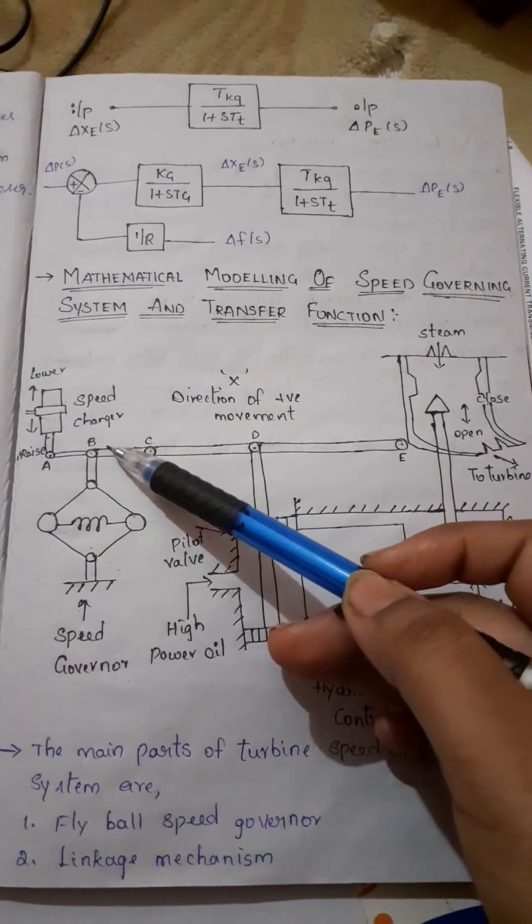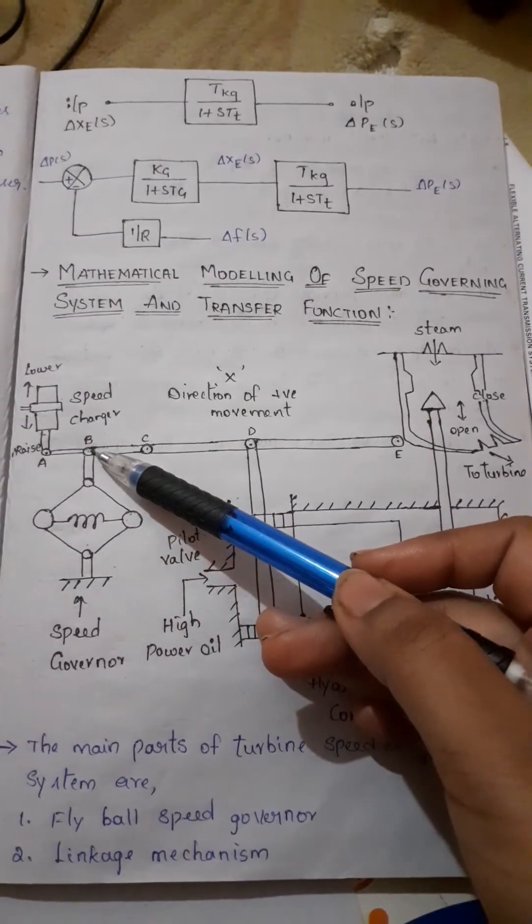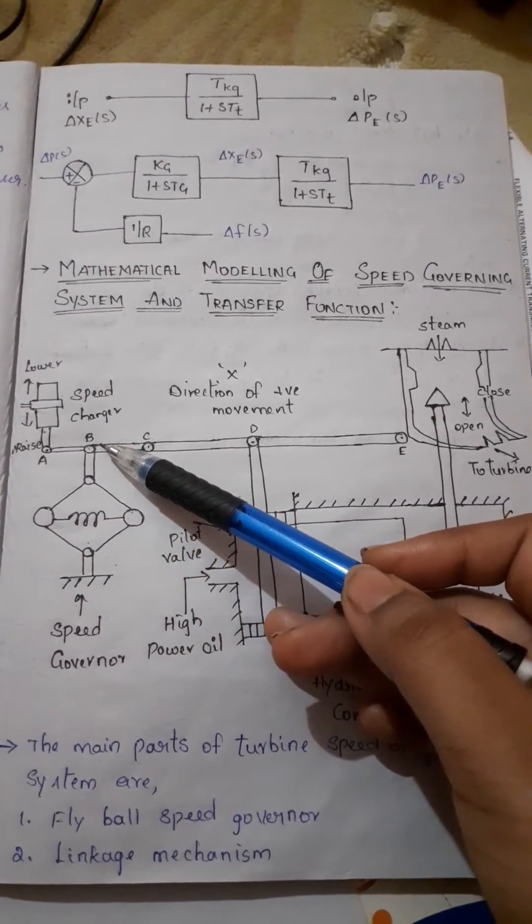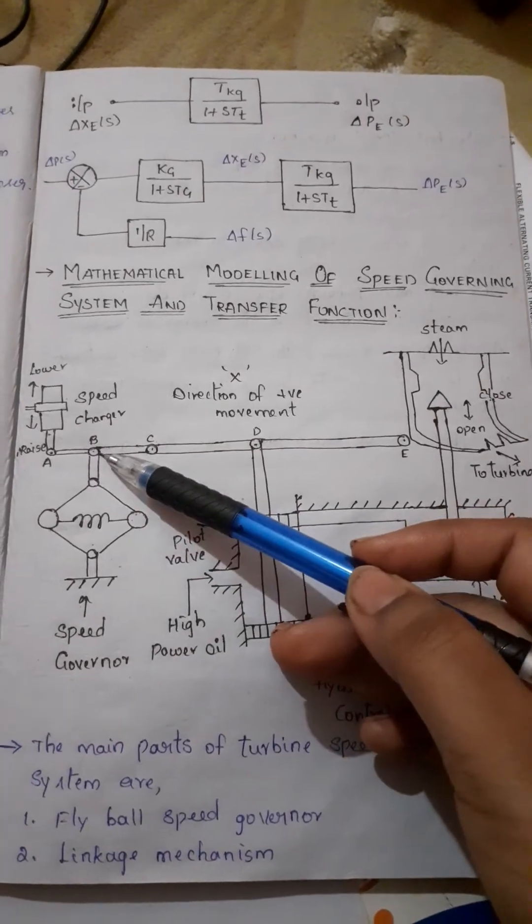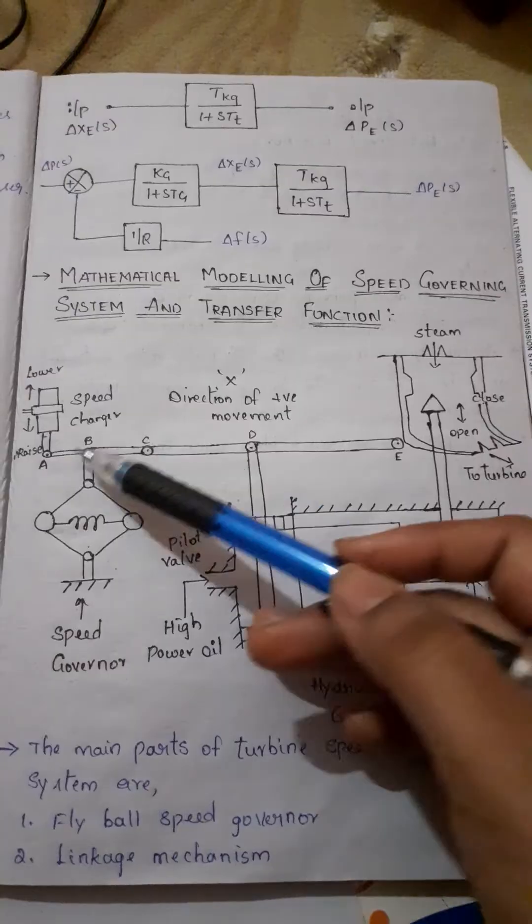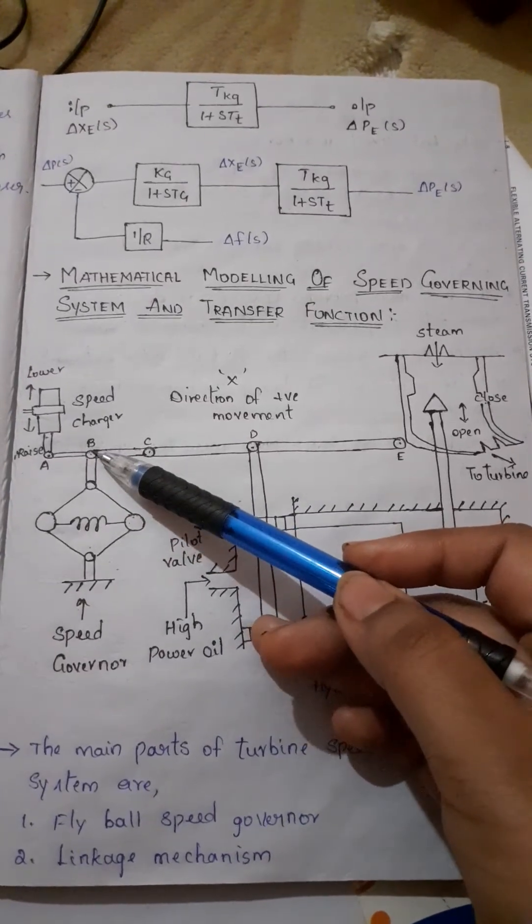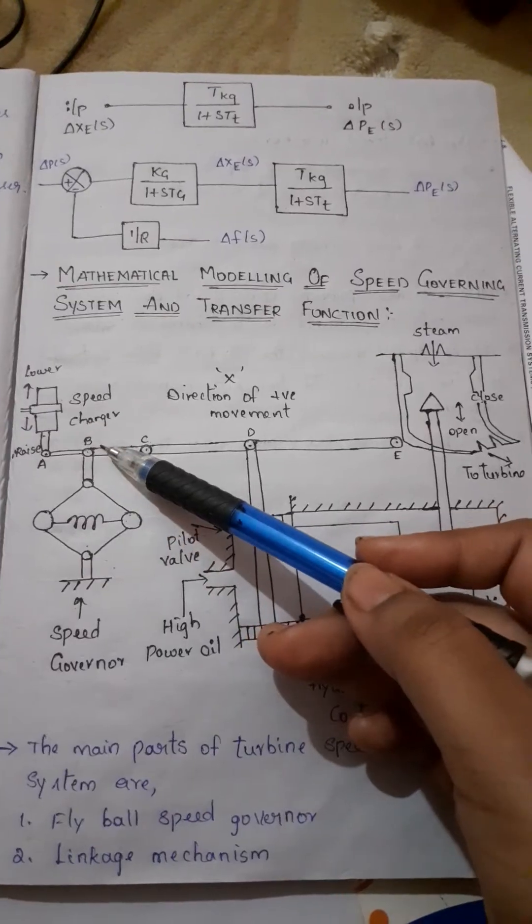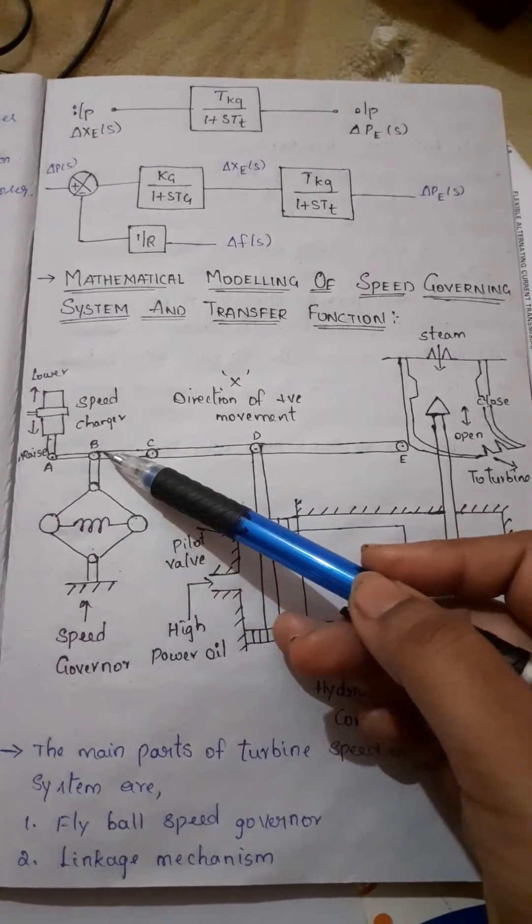When speed increases, the fly ball moves outwards and the point B on linkage mechanism also moves downward. In case speed decreases, the reverse will happen. First, when speed increases this happens.